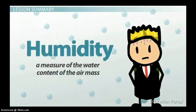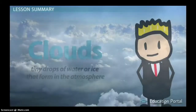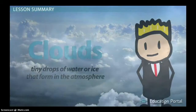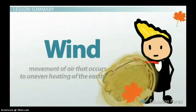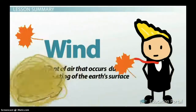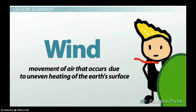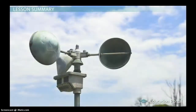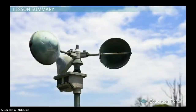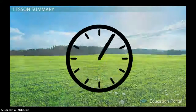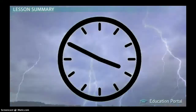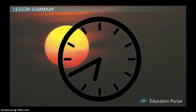Humidity is a measure of the water content of the air mass. Clouds are tiny drops of water or ice that form in the atmosphere. Wind is a process of movement of air that occurs due to the uneven heating of the earth's surface. These factors are measured using different instruments and are the main factors that determine the weather. They can change rapidly, making it challenging to predict for even the most veteran of weather forecasters.